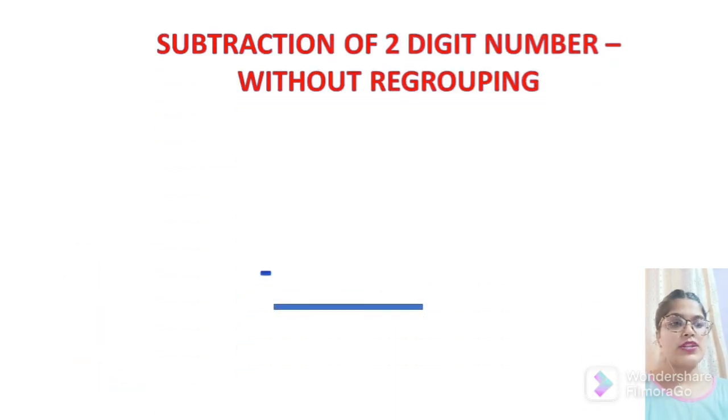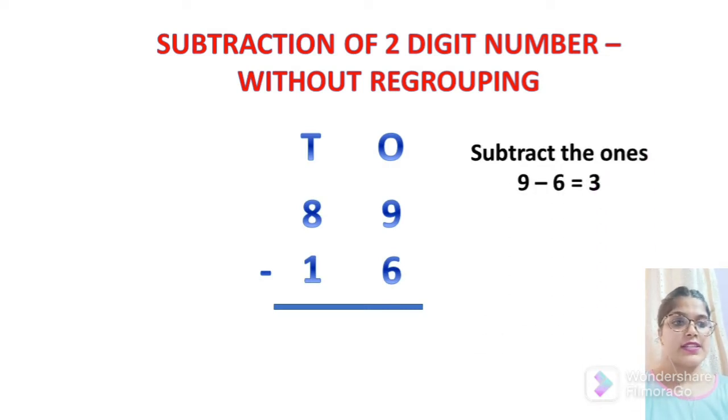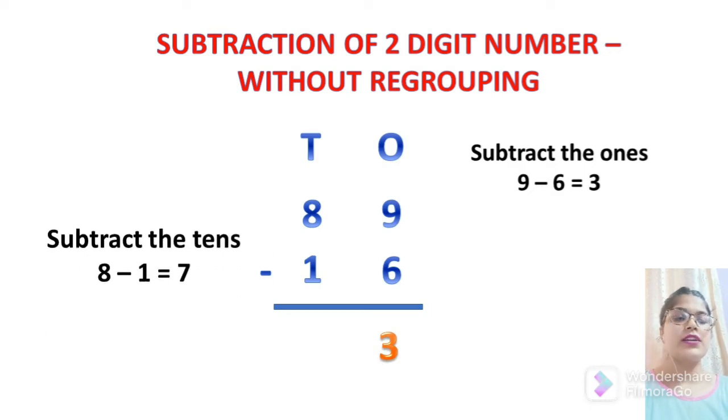Subtraction of two digit number without regrouping. For that, we will give heading of ones and tens. We will write 9 and 6 under ones column and 8 and 1 under tens column. We start subtraction from ones. 9 minus 6 is 3. So we will write 3 and under tens we have 8 minus 1. So 8 minus 1 is 7.